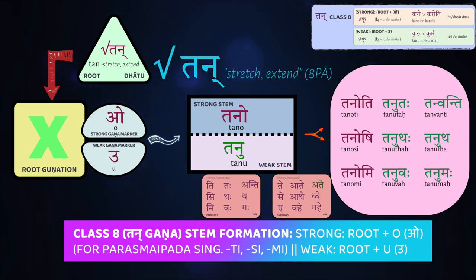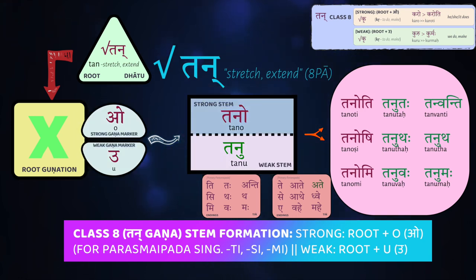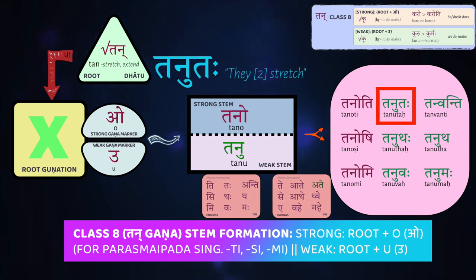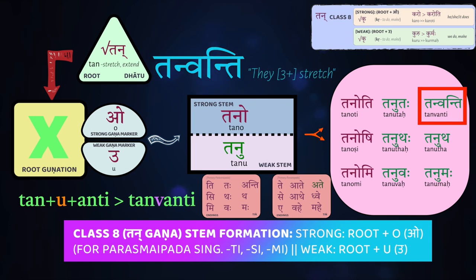Let's look at tan. We take the root tan, we add o to get our strong stem tano, and we add u to get our weak stem tanu. Then we add our endings. In the strong form, we get tanoti — he/she/it stretches. Tanutaha uses the weak form — the two of them stretch. And tanuanti — they, three or more, stretch.